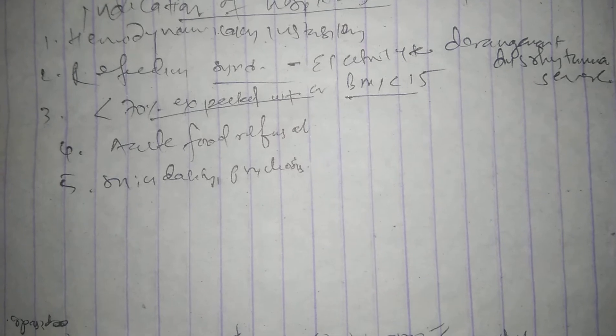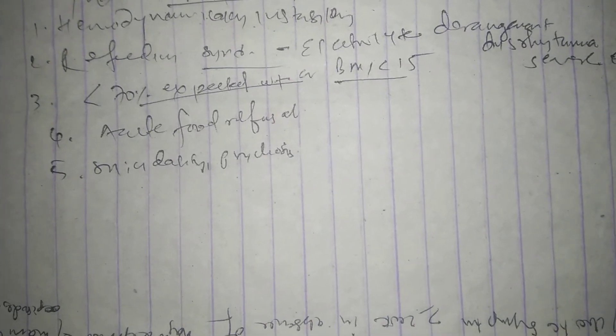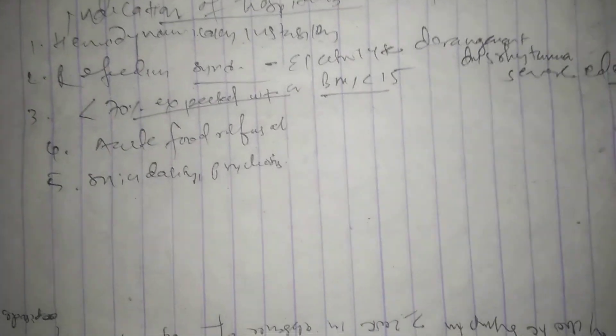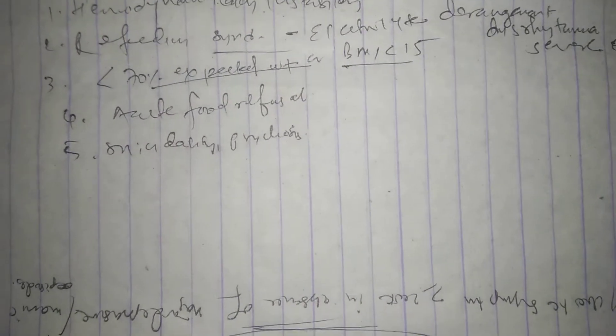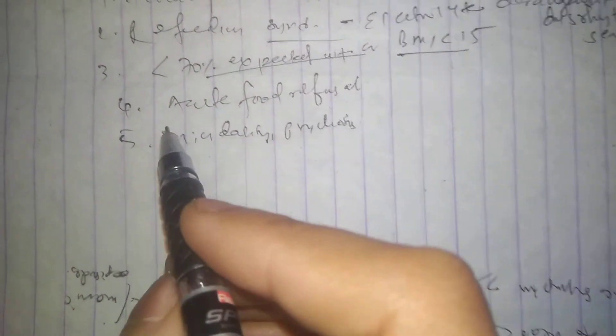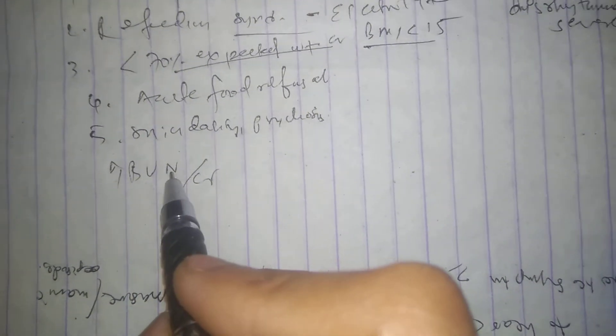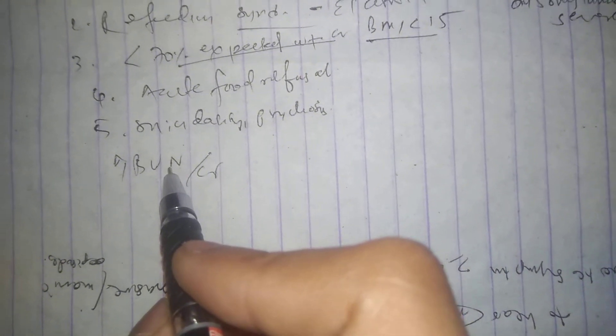Self-induced vomiting can cause dehydration and result in lightheadedness or syncope and elevated BUN-creatinine ratio, orthostatic hypotension. And if there is cardiac arrhythmia...